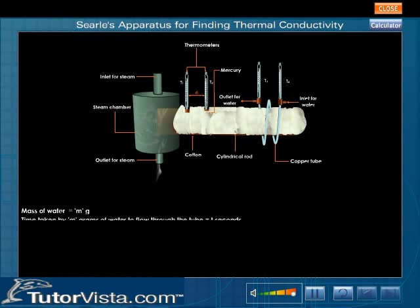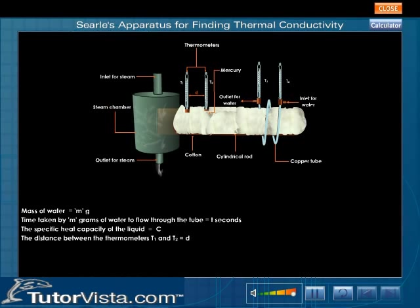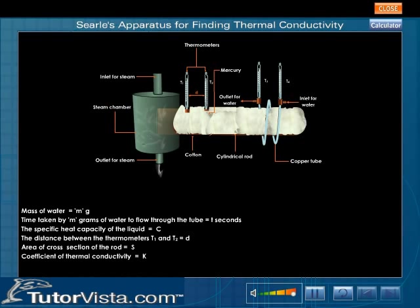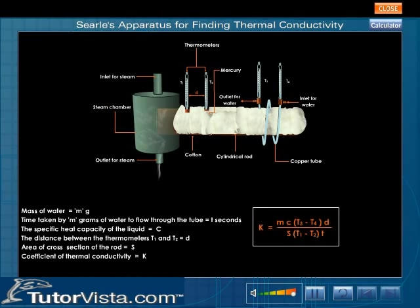Knowing m, c, and the temperatures, we can calculate the coefficient of thermal conductivity using the formula: k = (m × c × (T3 − T4) × d) / (s × (T1 − T2) × t), where m is the mass of water and k is the coefficient of thermal conductivity.